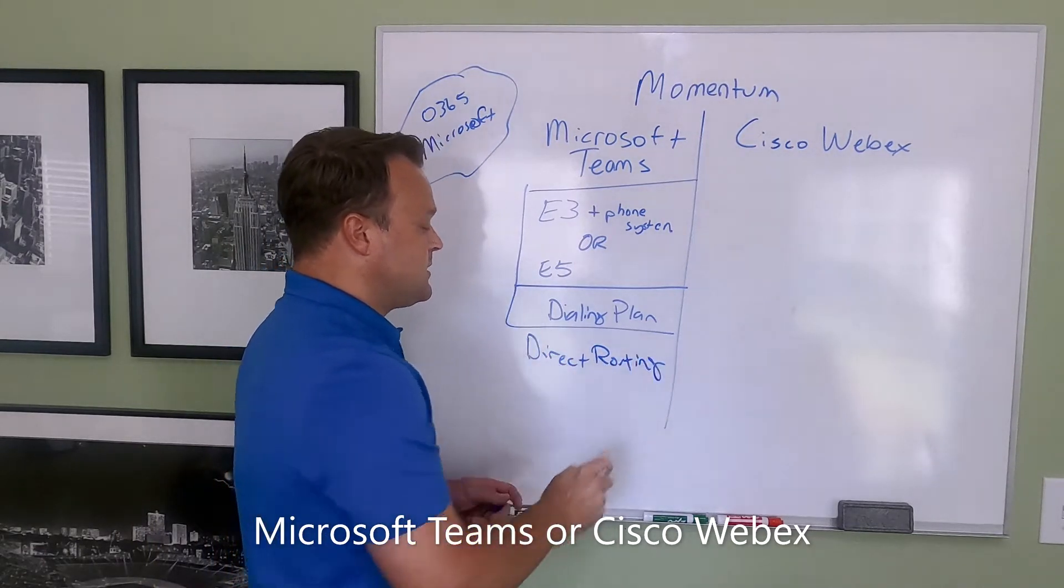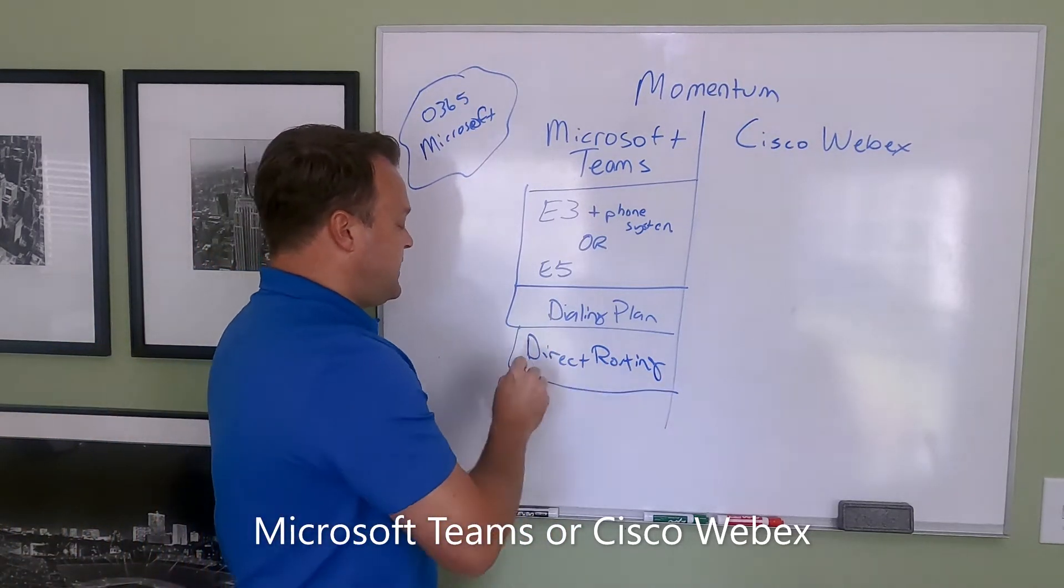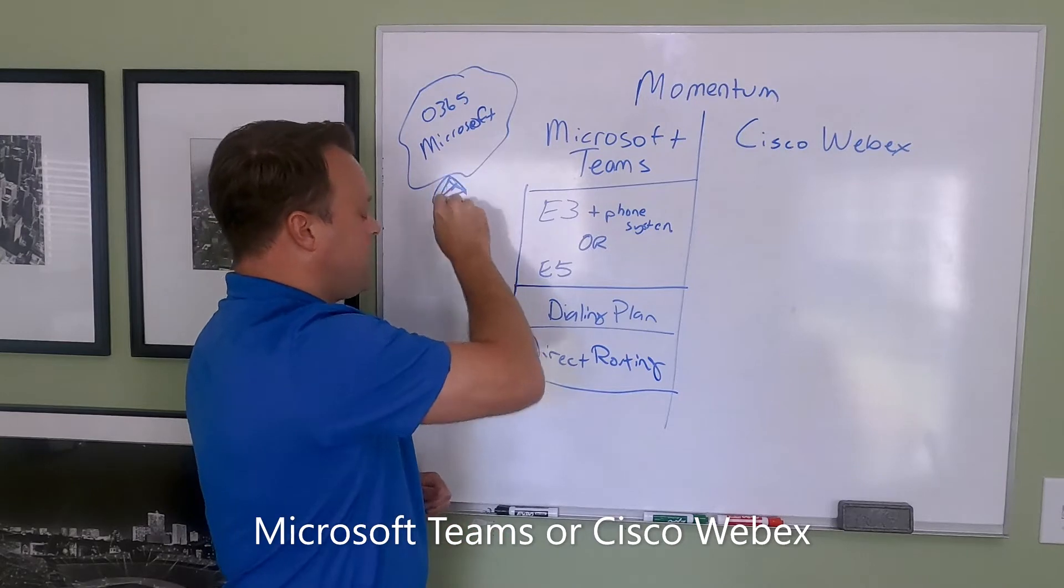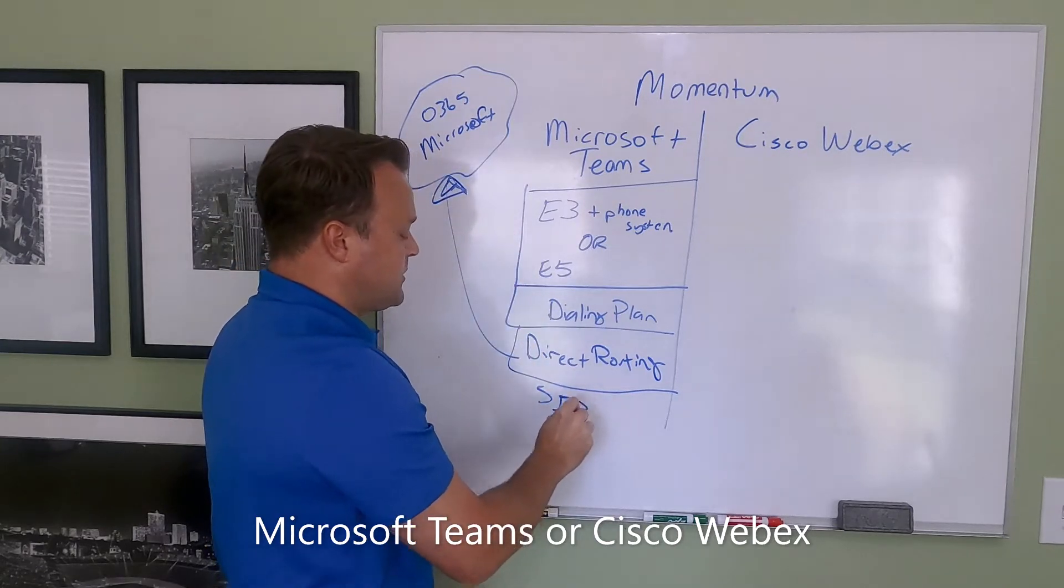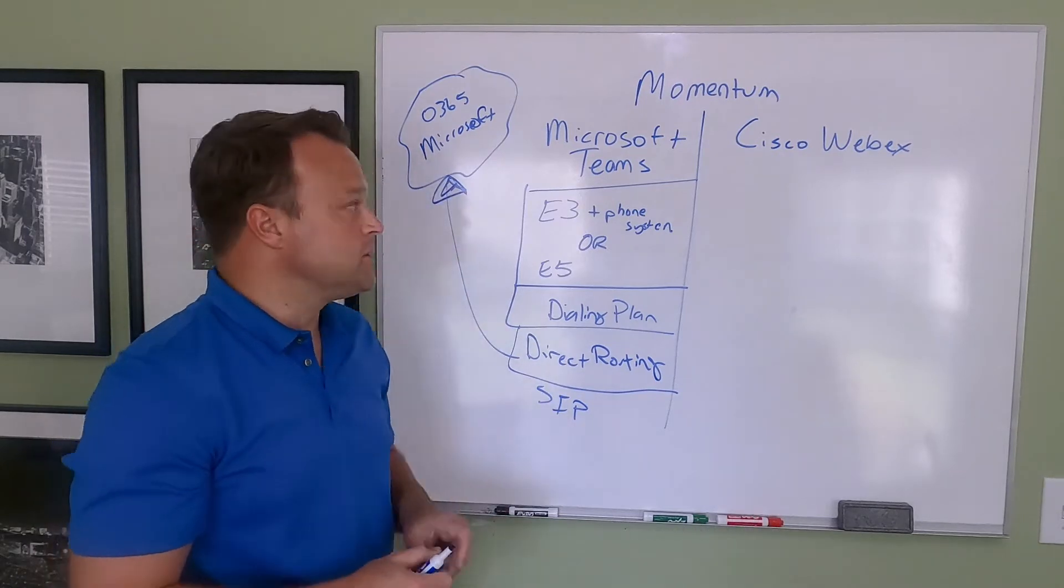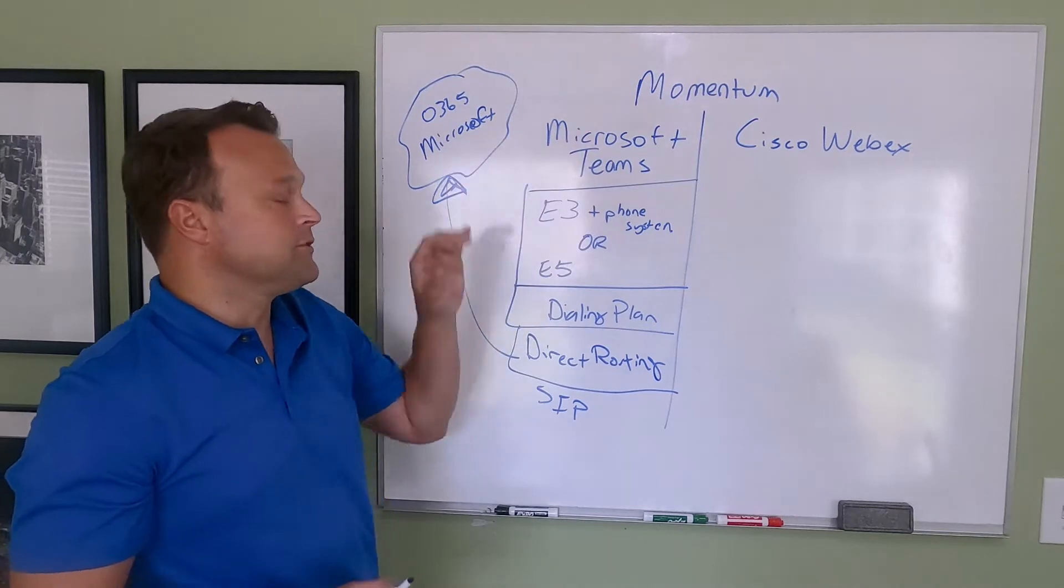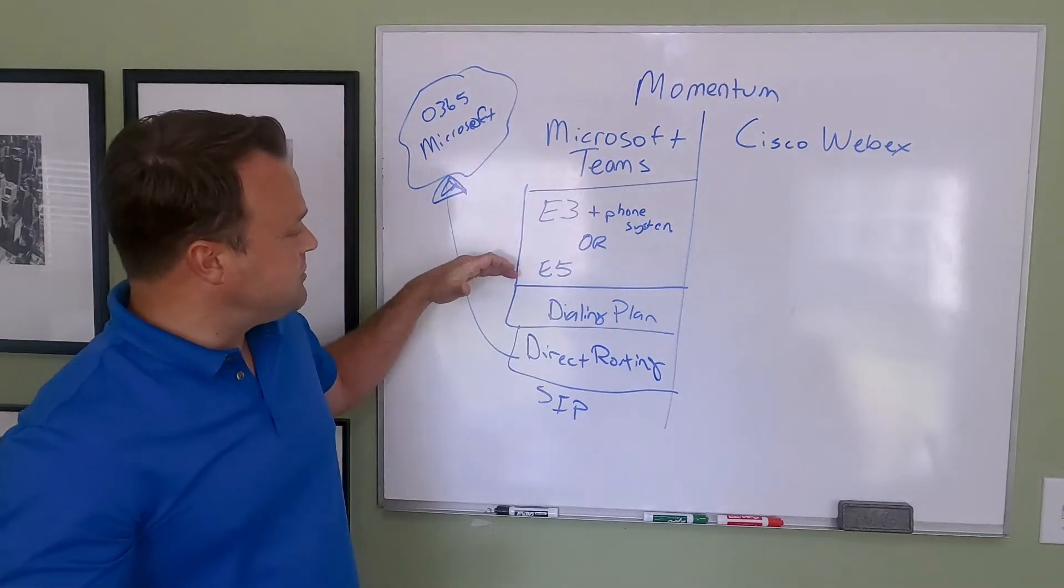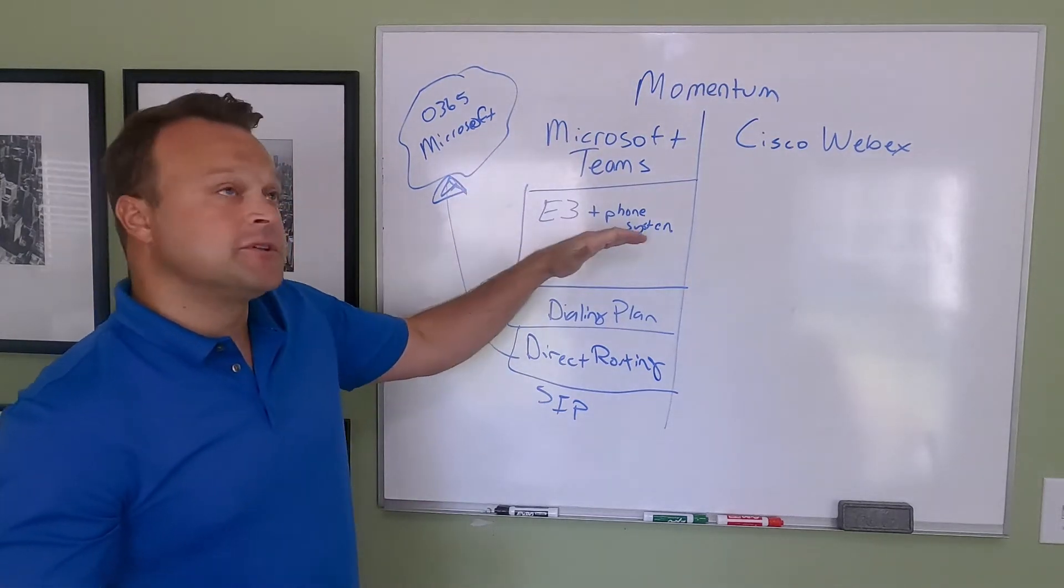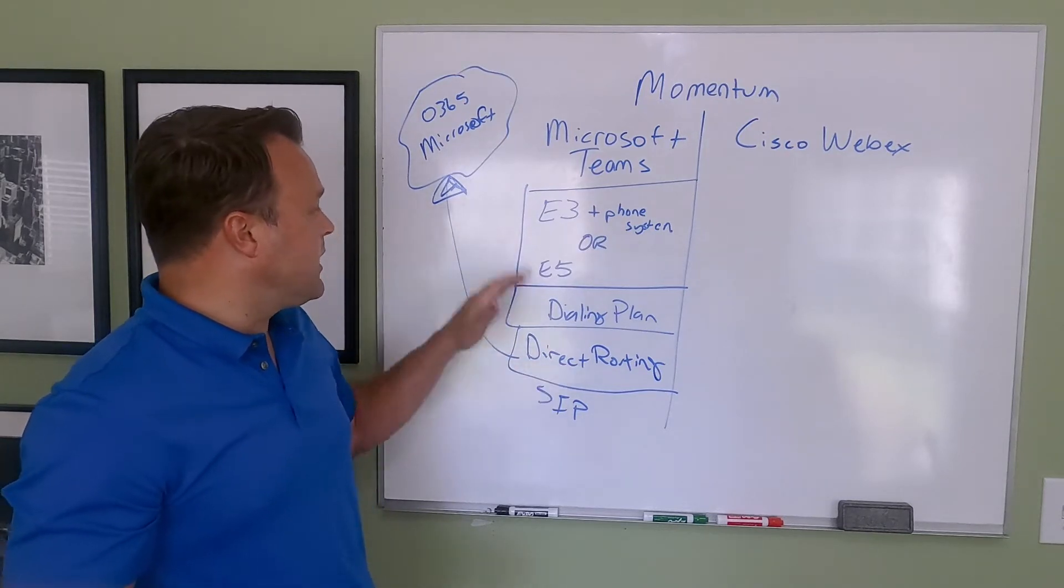Direct Routing is provided by providers like us. Think of Direct Routing as SIP trunks up to Microsoft. We provide that Momentum Direct Routing over to Microsoft. So you port your telephone numbers to Momentum, and we hand the dial tone over to Microsoft. So long as you have your E3 with a phone system license or an E5 with Direct Routing, you can go.